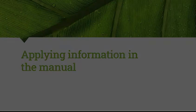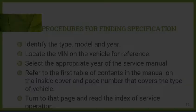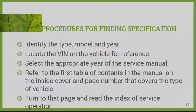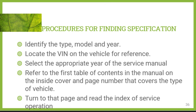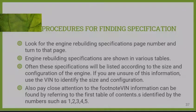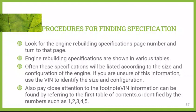When applying information in the manual, the procedure for finding specifications is: identify the type, model, and year of the vehicle; locate the VIN; select the appropriate year; refer to the table of contents; find the page number covering the type of vehicle; then turn to that page and read the index of service operations. Look for the engine rebuilding specifications page and turn to it — these are shown in various tables, often listed by engine size and configuration. Pay attention to footnotes, and note that VIN information can be found by referring to the first table of contents.